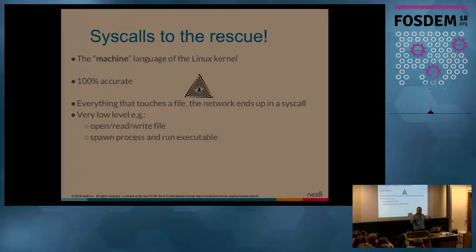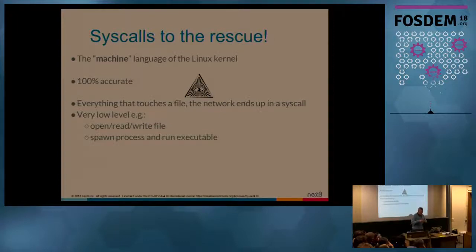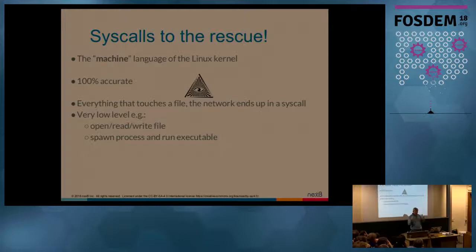The kernel typically doesn't know much about what's happening above. It knows about filesystem, network, CPU scheduling. The simple things it does: it's asked to open a file, close a file, read some bytes, write some bytes, spawn a process - that kind of thing. It's a very low level, and that's why it's a good idea to think of it as the equivalent of machine language for user space.